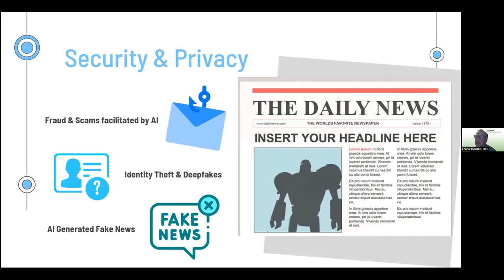The area of security and privacy should be very familiar to all of us given our reliance on the internet and the waves of online scams and phishing attempts we experience almost daily. I want to bring two additional growing security and privacy areas to your attention. AI algorithms can be used to impersonate individuals and create synthetic identities — identity theft through AI can lead to unauthorized access to personal information, financial fraud, and reputational damage. It's becoming increasingly challenging to distinguish genuine from synthetic content. Just this week, a headline read: 'Deepfakes have turbocharged disinformation threats to elections.'